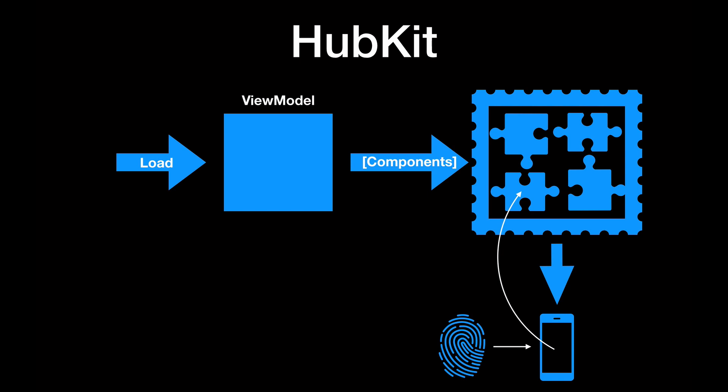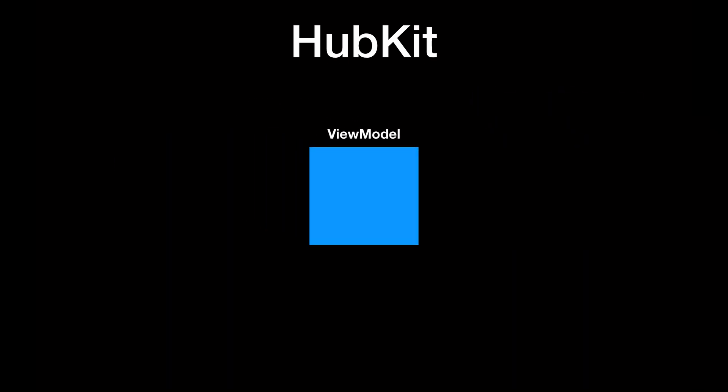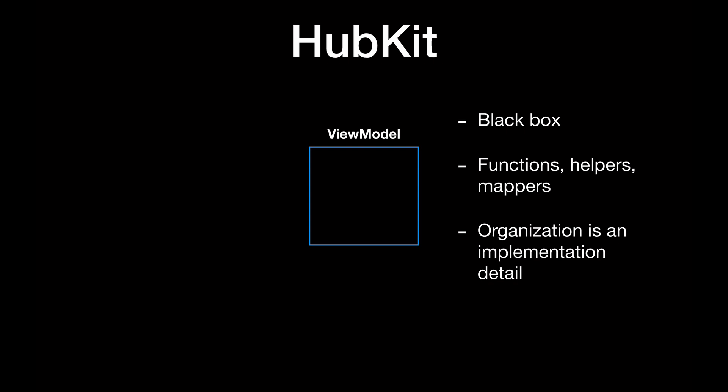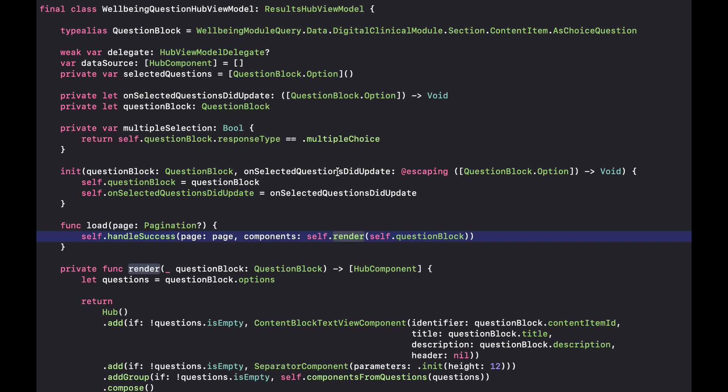We have different types of components. Some are specific enough to know how to deal with interactions — for example, a component that shows a phone number for a retailer knows to make a phone call using the phone APIs. Then we have others, the vast majority, that are more generic and accept different types of data or nested components. These delegate back into the view model. The view models need to be a black box: what we care about is that they give us back the array of components, because that's what we need to test.